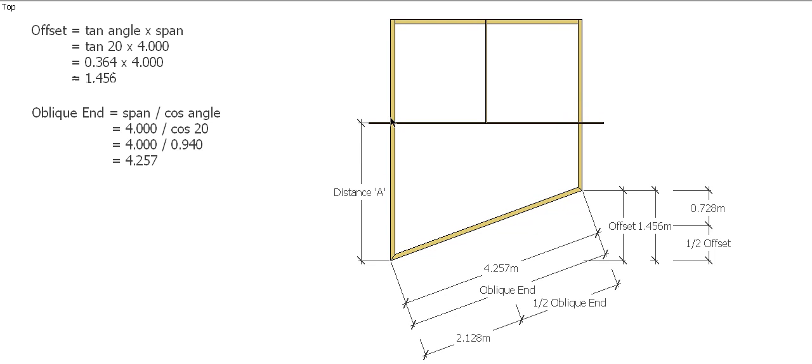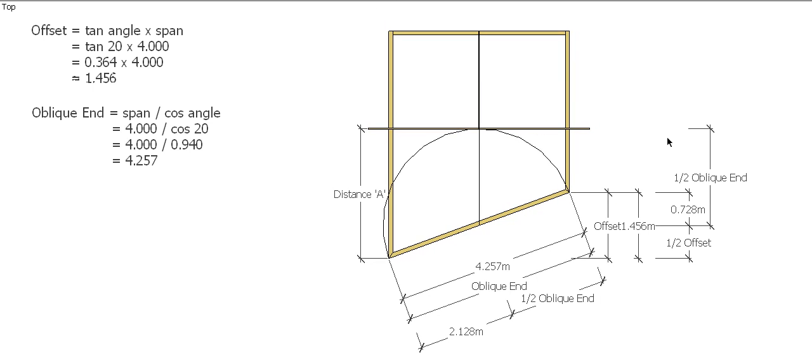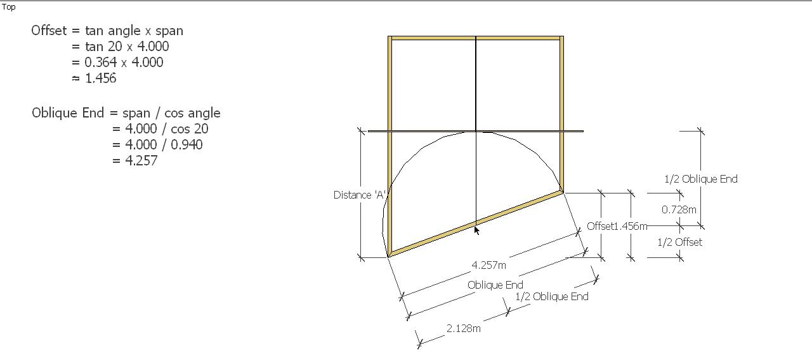So what we want to know is the distance from this corner to the center line of our centering rafter. Now a unique feature of this oblique ended roof is that if we take a line from the center of our centering rafter, extend the ridge out to our oblique end, that distance is actually exactly half of our oblique end. And you can see there with the circle, the radius of the circle is half the oblique end. So I already know what this distance here is. It's going to be 2.128. So that's the distance from center line of our centering rafter to the center of our oblique end.